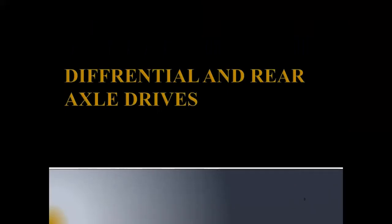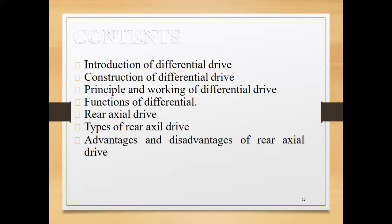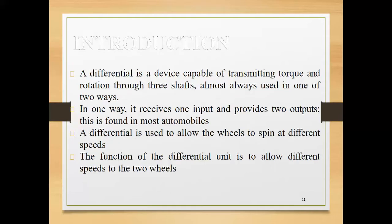Now let's come to the topic of differential and rear axle drives. In this topic, we will cover the introduction of differential drive, construction of differential drive, principle and working of the differential drive, and the function of differential drive. For rear axle drive, we will discuss the introduction, types of rear axle drive, and advantages and disadvantages. A differential is a device capable of transmitting torque and rotation through three shafts, almost always used in one of two ways. In one way, it receives one input and provides two outputs. This is found in most automobiles. A differential is used to allow the wheels to spin at different speeds.